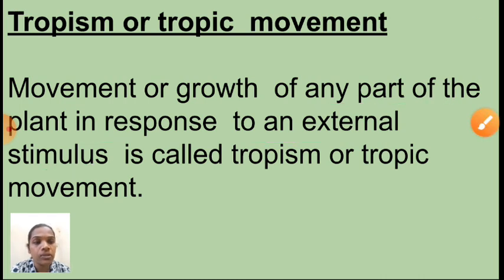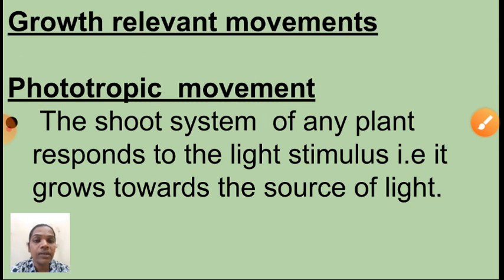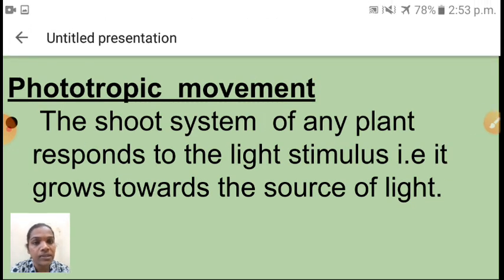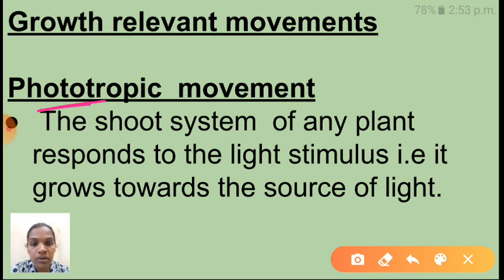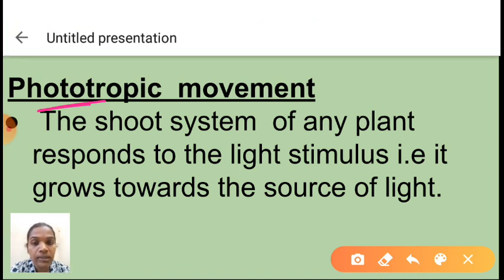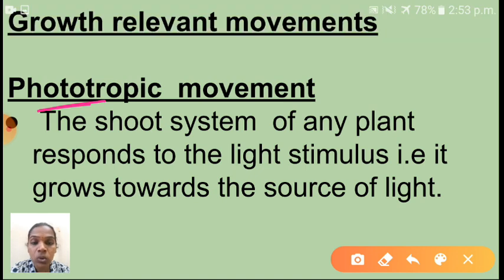Now we will see about growth-relevant movements one by one. First one is phototropic movement. Photo means light. The shoot system — that means the tip region of the plant — will grow towards the sunlight. So the shoot system of any plant responds to the light stimulus; it grows towards the source of light. This kind of movement is called phototropic movement.